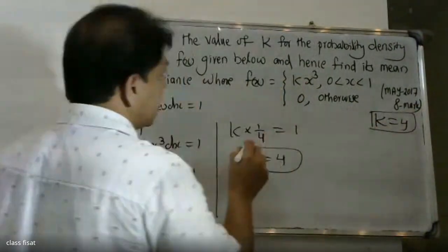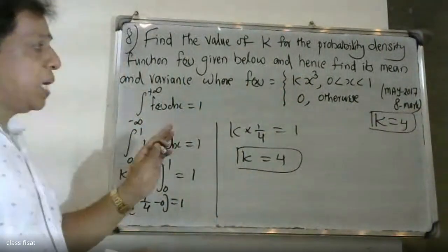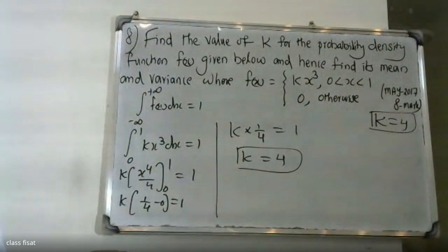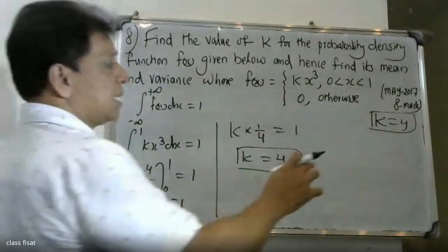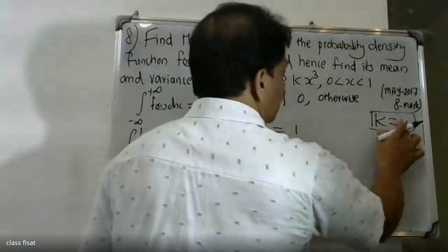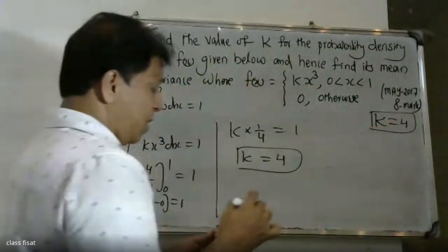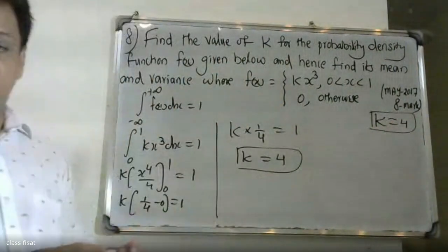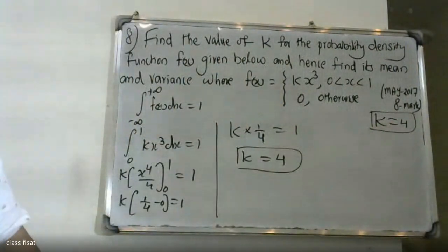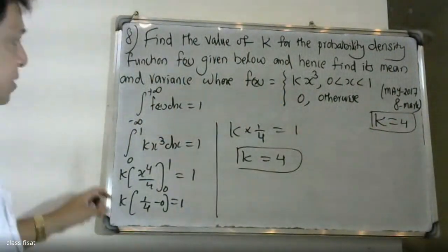So the value of k is equal to 4. Now we proceed to find the mean and variance.